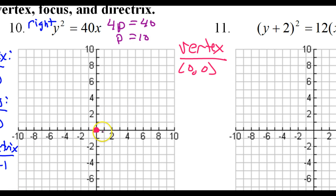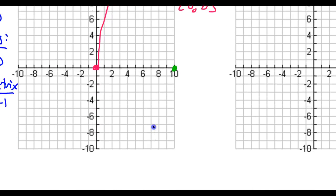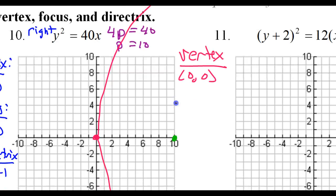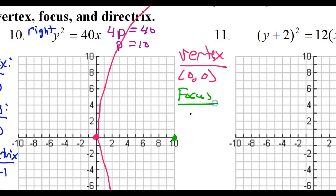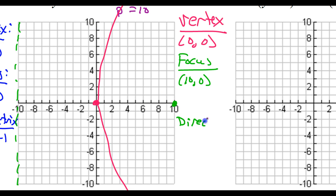That 10 tells me where to put the focus. I need to go 10 away from the vertex to the right. So the focus is going to be right here. The focal width is 40, that means I need to go 20 up and 20 down — that's going to be way off the graph. The focus is at 10 comma 0. The directrix should be the same amount in the opposite direction, so it will be the vertical line at negative 10. The directrix is x equals negative 10.